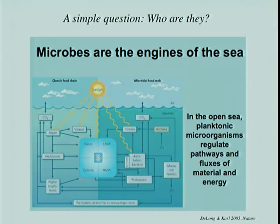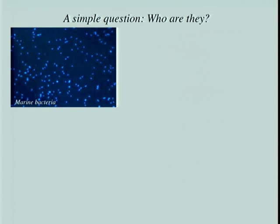Given their importance, a very simple question arises: who are they? What is the biodiversity of this component? Which species form these assemblages? This simple question is not trivial to address. Natural biologists identify organisms by morphology, but for microbes you need a microscope, and heterotrophic bacteria viewed under epifluorescence all look the same. You cannot apply morphological criteria to identify them.